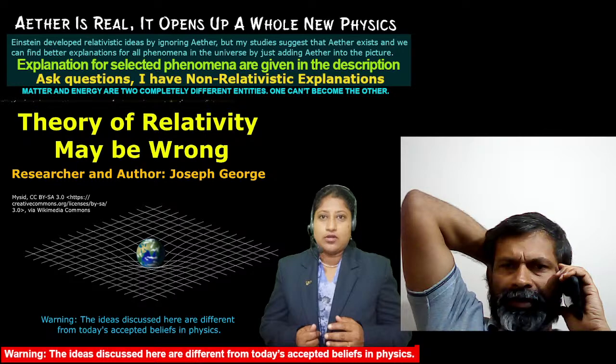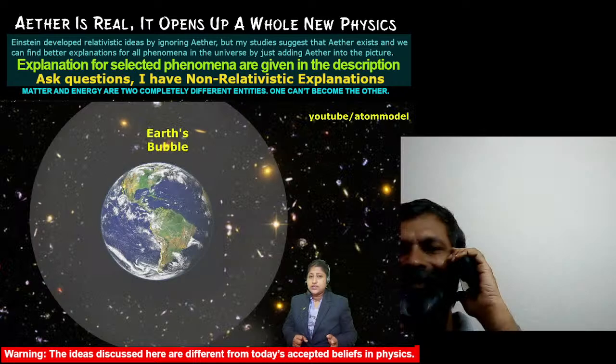Every massive body maintains a dense region of aether around it. For example, the earth — earth's gravity keeps a dense region of aether around it. In other words, the earth sits inside an aether bubble. Earth travels through space with this bubble, and because of this, the earth will not experience any aether wind.